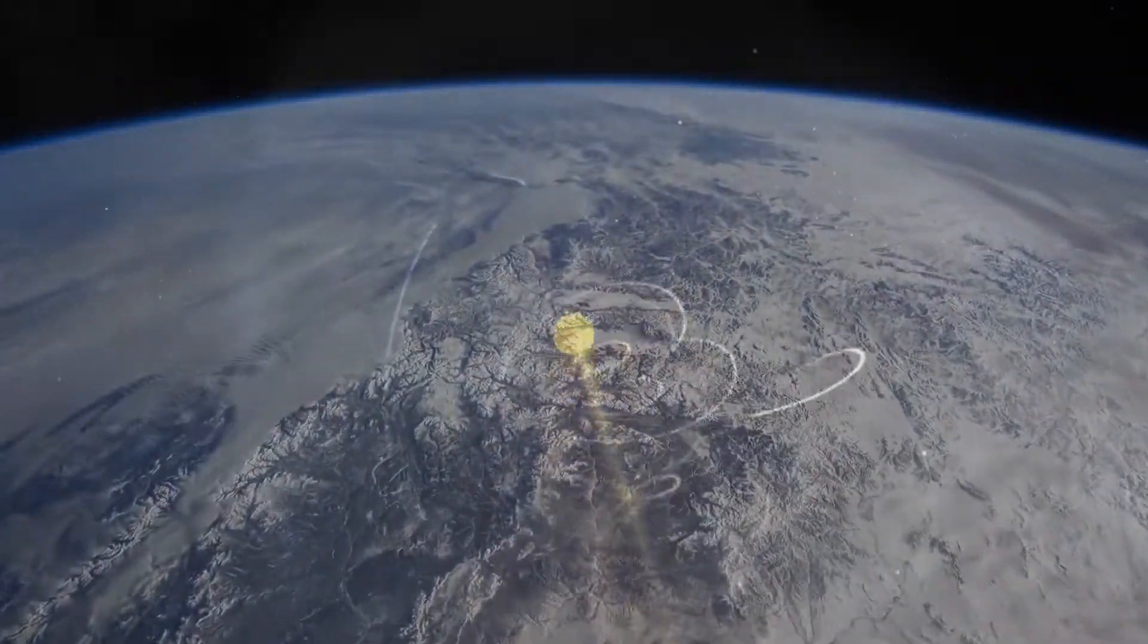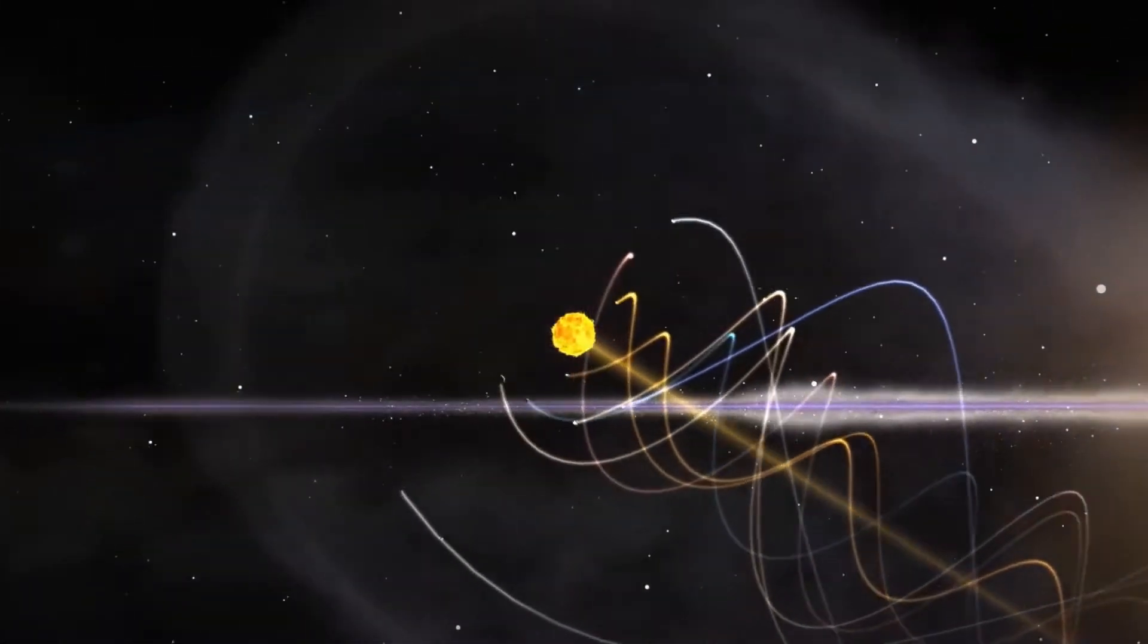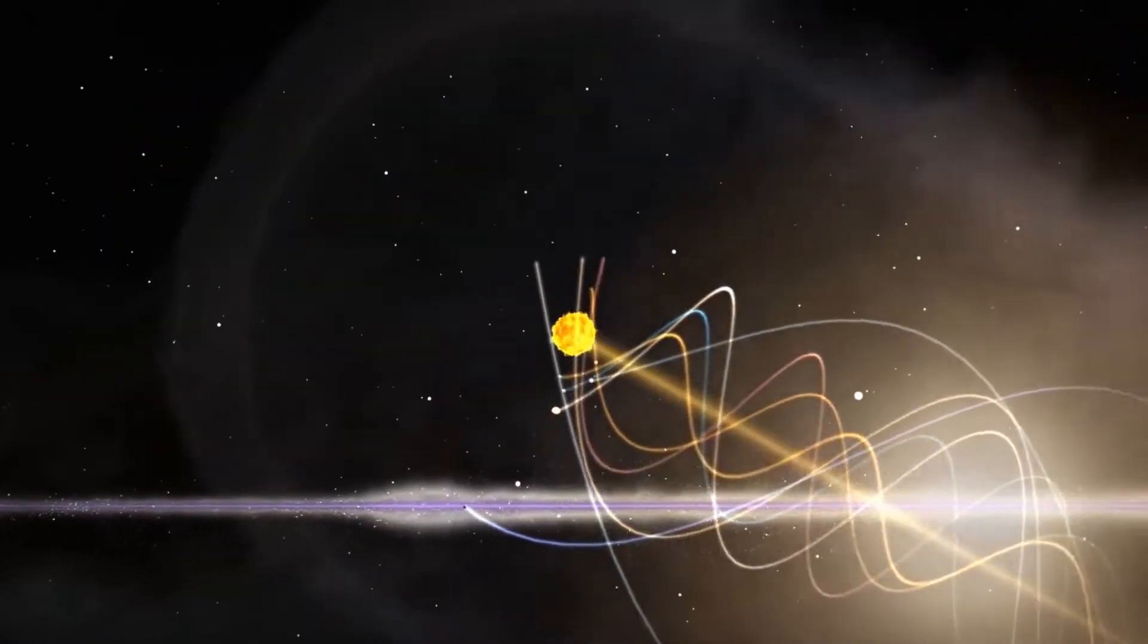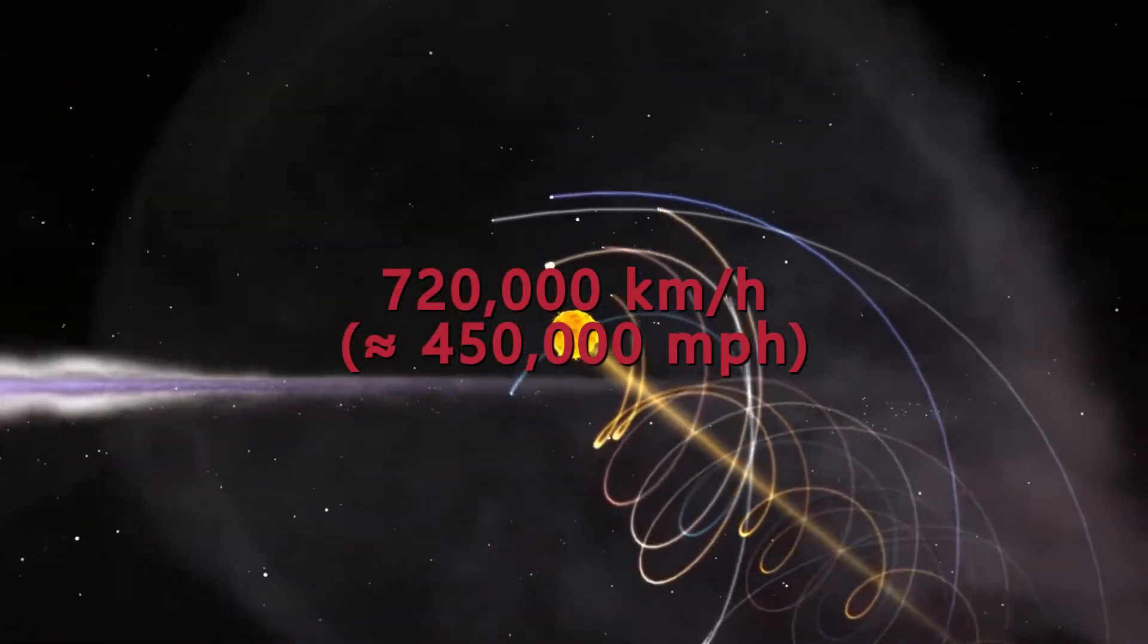Although it might sound impressive, the solar system, including our blue planet, is moving around the center of the Milky Way galaxy at an astounding speed of about 720,000 kilometers per hour.